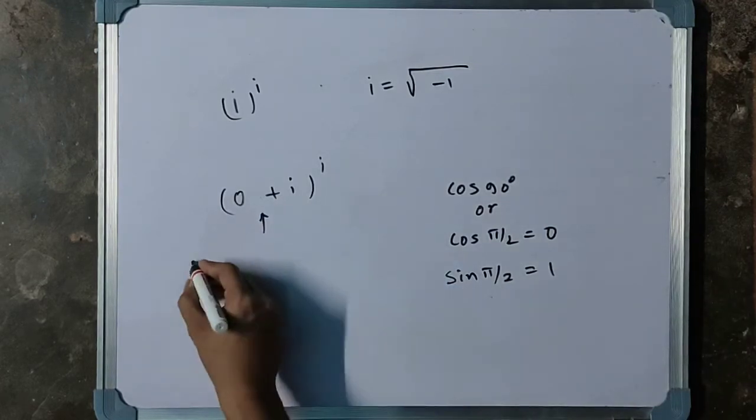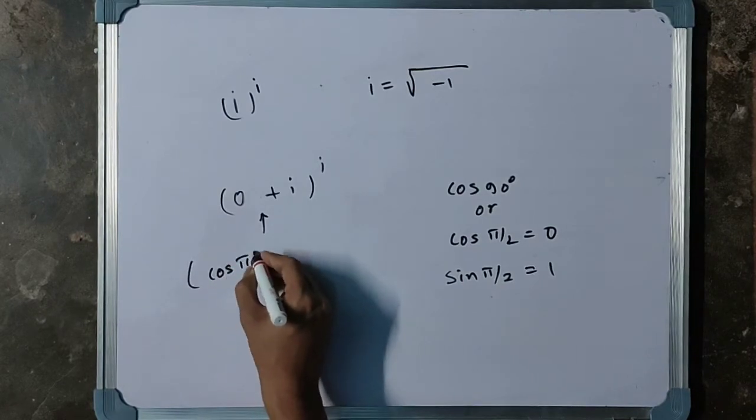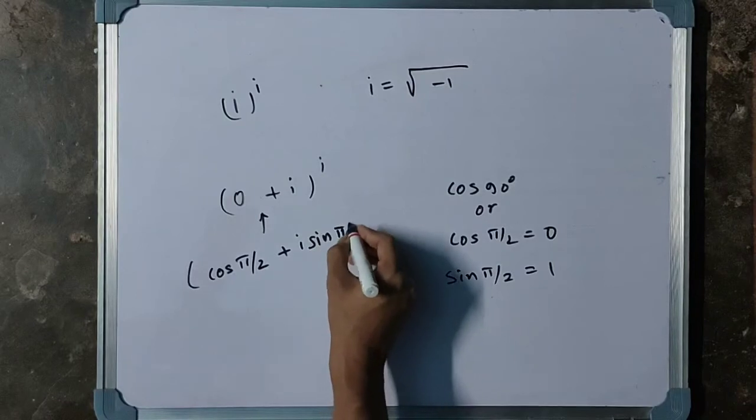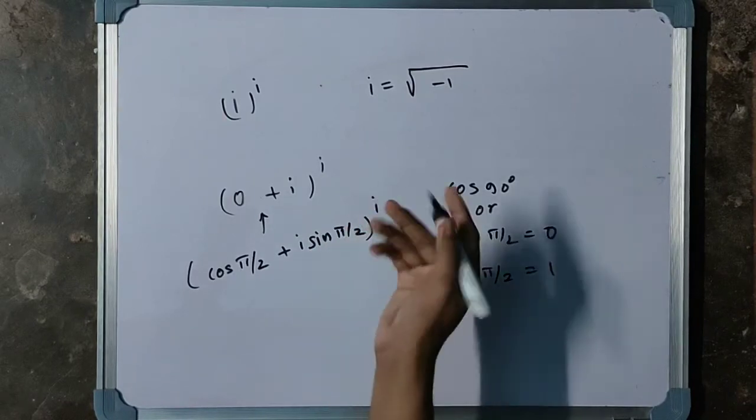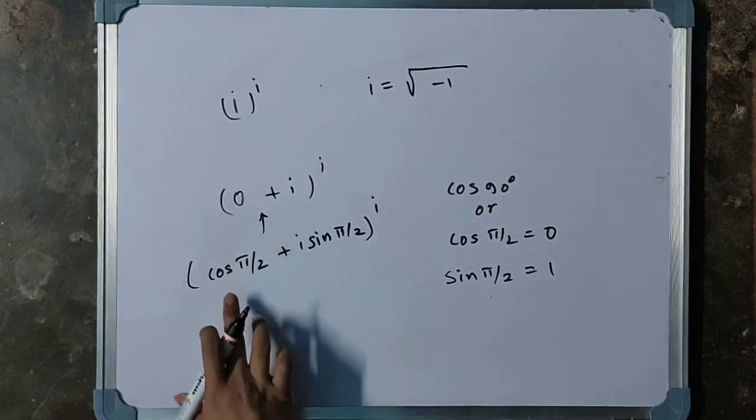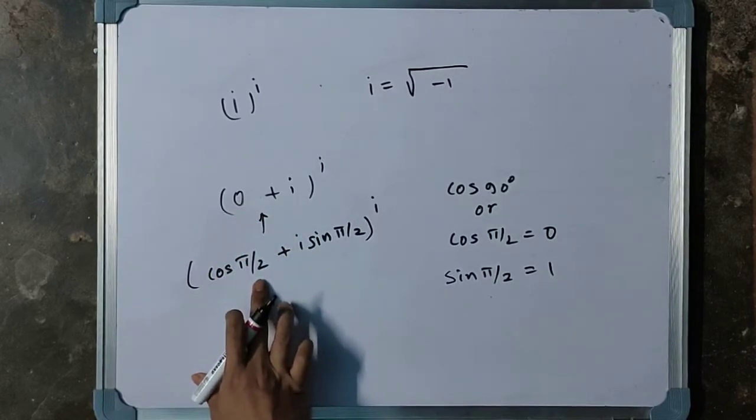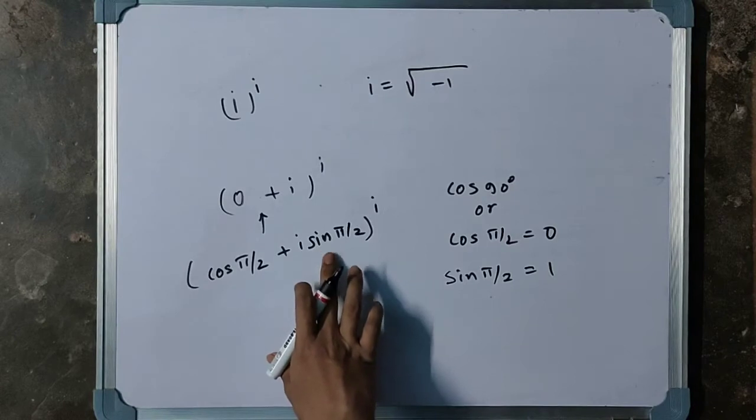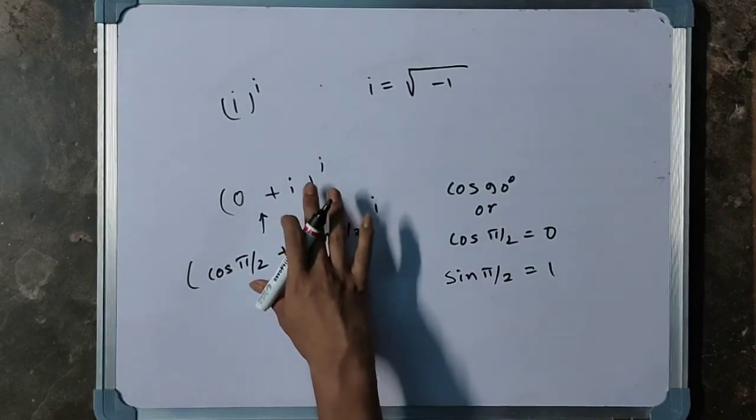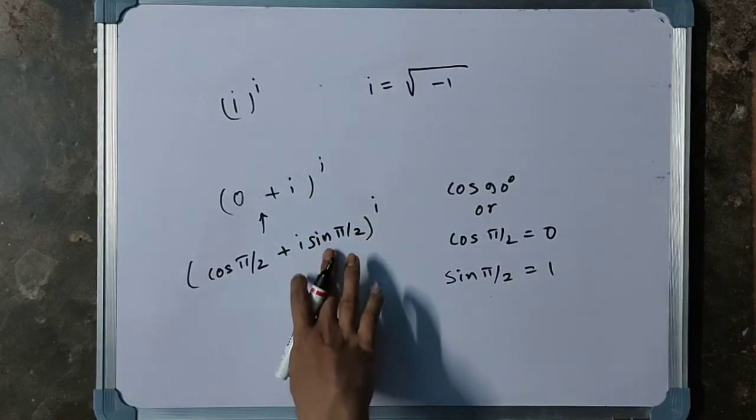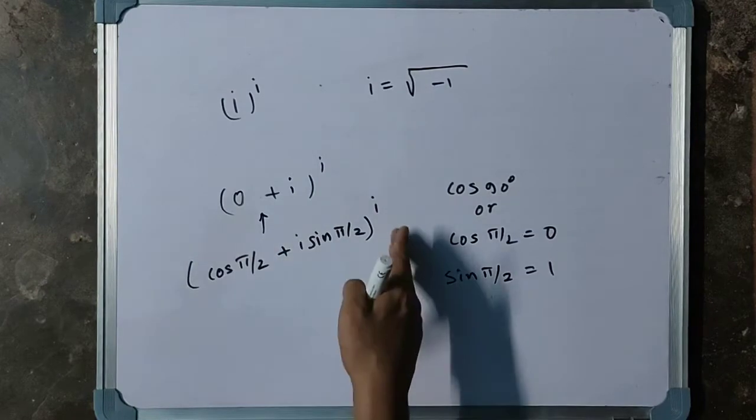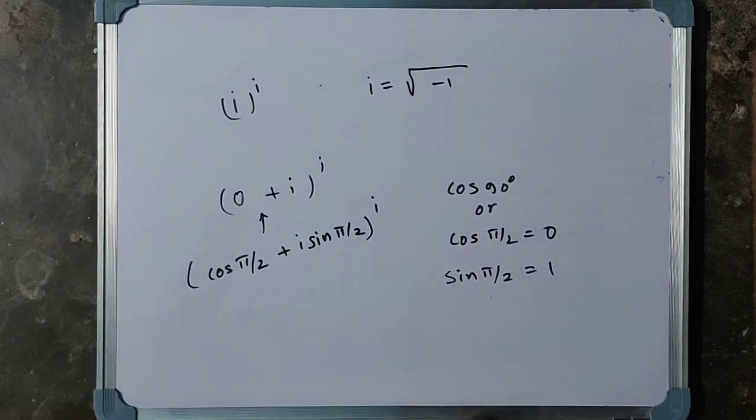If we write (cos π/2 + i sin π/2) raised to the power i, we can write this because in place of 0, we are writing cos π/2, and in place of 1, from where is 1 coming? Basically, i means i multiplied by 1. From there, we are multiplying 1, which is sin π/2, and raising to the power i.